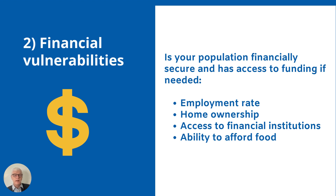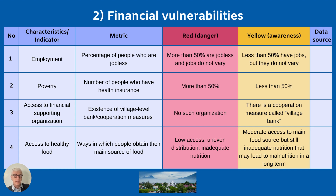Financial vulnerability looks at whether your population is financially secure and has access to funding in the event of a disaster. Benchmarks to consider include employment rates, home ownership, access to financial institutions, and the ability to access and afford nutritious food. For example, if 50% or more of the community were jobless with little variance in skill sets, that would be a dangerous vulnerability, while a community where most people are employed but lack variety would be a yellow zone.